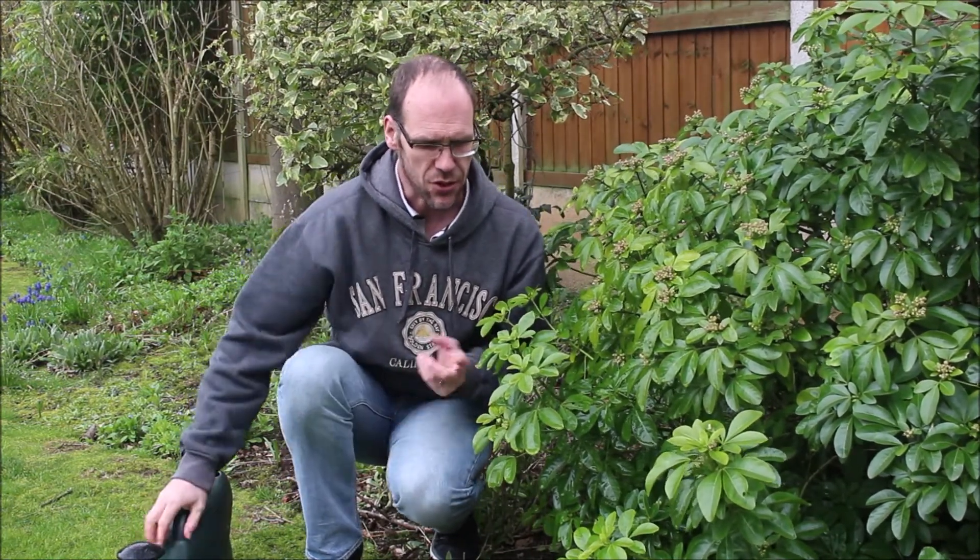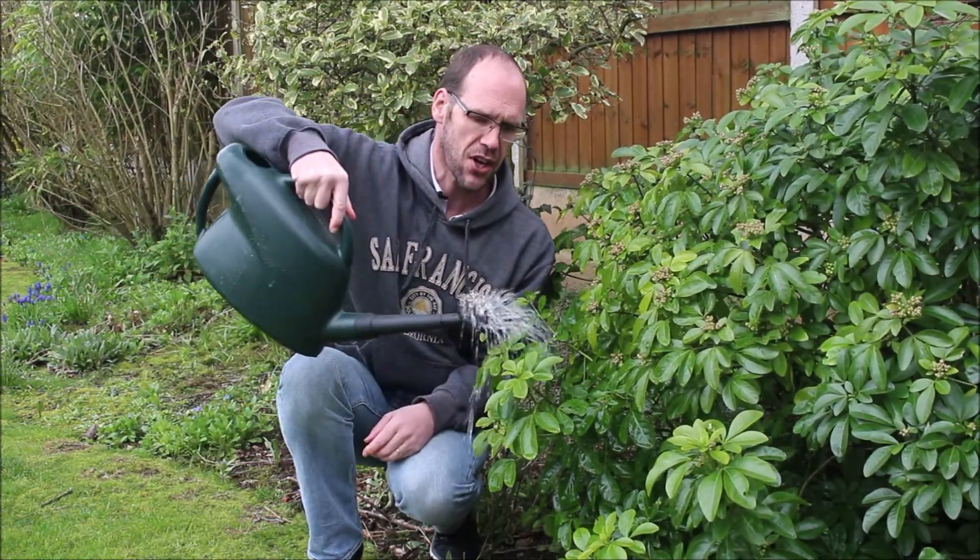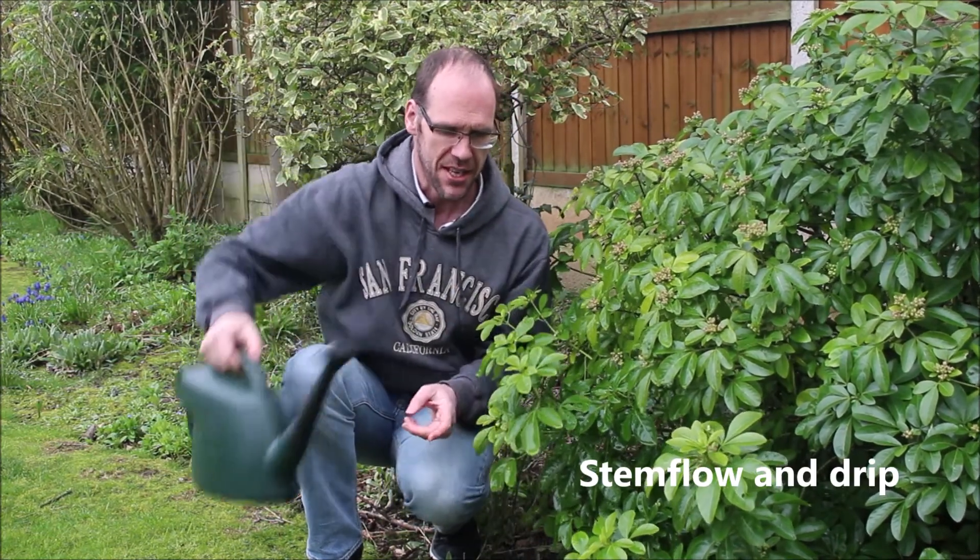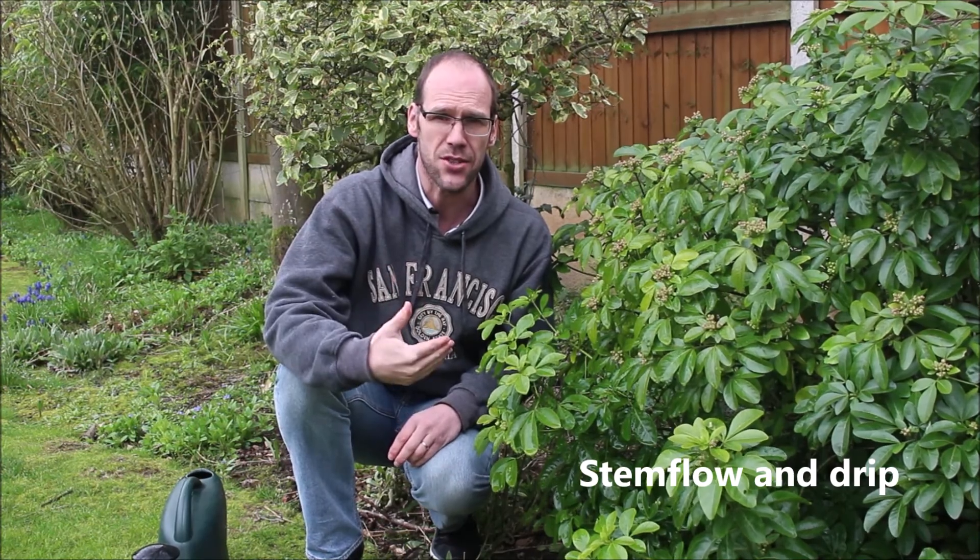The water is still dripping off the bush onto the ground. Now, in geography, water coming off a tree or off a bush is known as stem flow and drip.